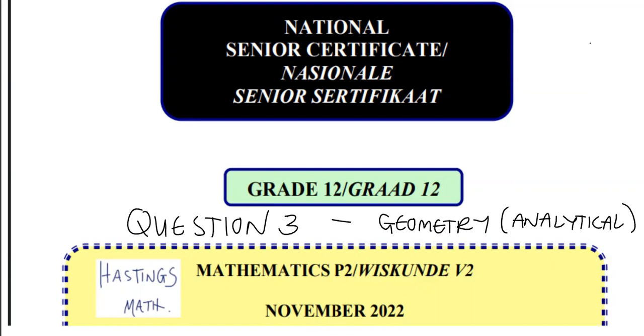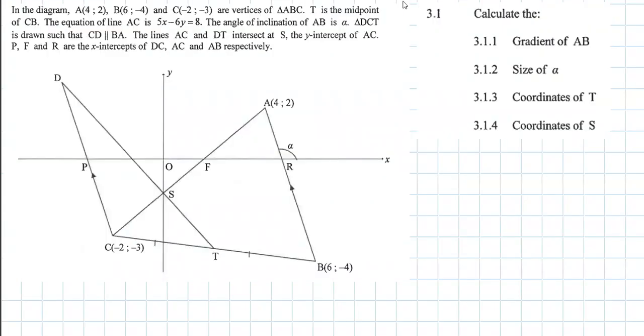Question 3 is a Geometry and Analytical Geometry question. We have a diagram with a lot of information, so let's start seeing what we have. A is at (4, 2), B is at (6, -4), C - those are all vertices on the triangle, points on the triangle ABC.